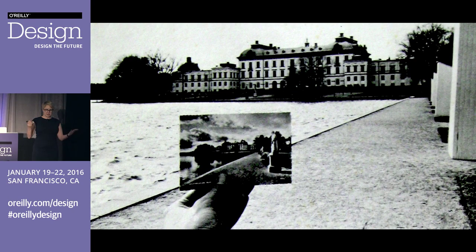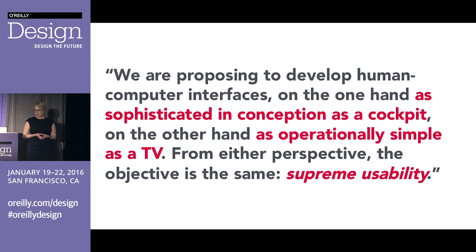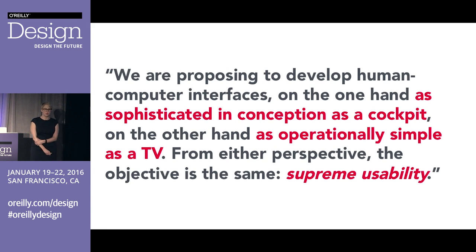As the Architecture Machine Group progressed through the 1970s, they got more interested in simulation and intelligence simulation, and coined the term 'supreme usability': 'We are proposing to develop human-computer interfaces on one hand as sophisticated in conception as a cockpit, and on the other hand as operationally simple as a TV.' After about 1976, the majority of the Architecture Machine Group's funding came from the Office of Naval Research or DARPA — these are battlefield and simulation technologies intended to keep soldiers off the ground.